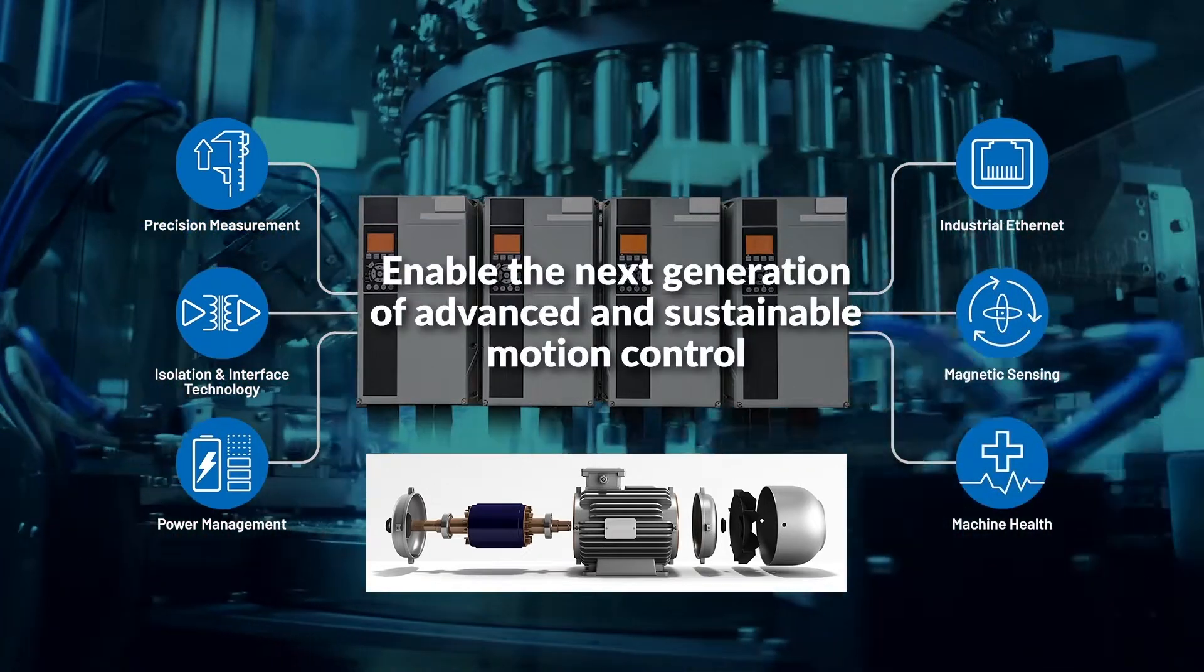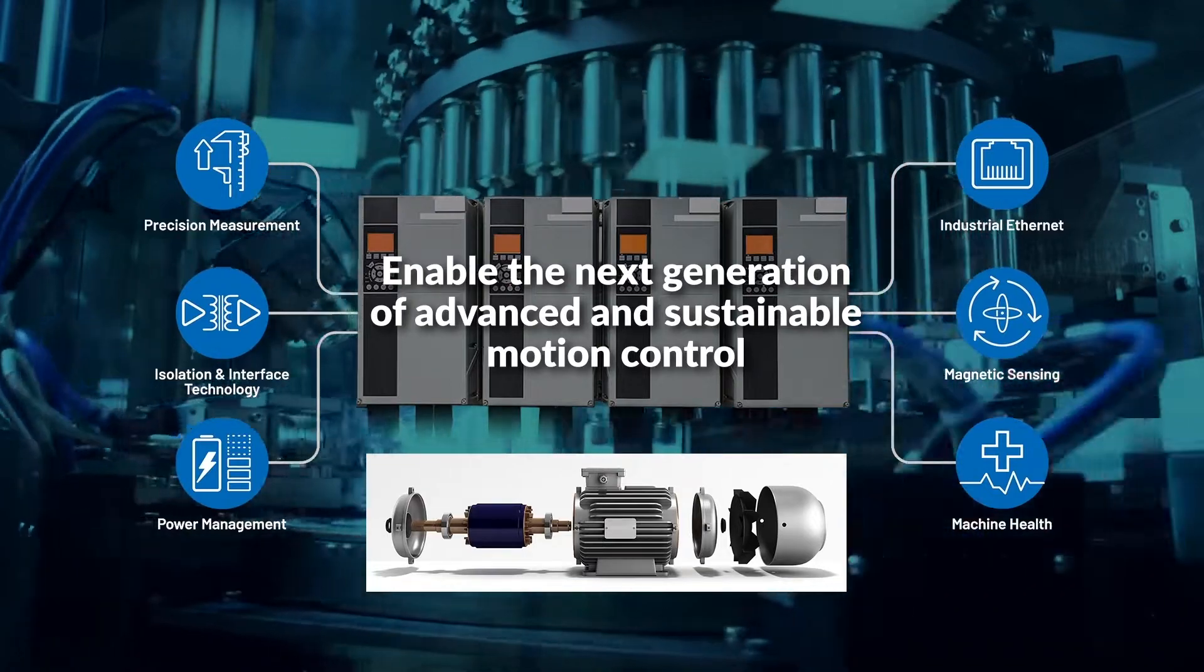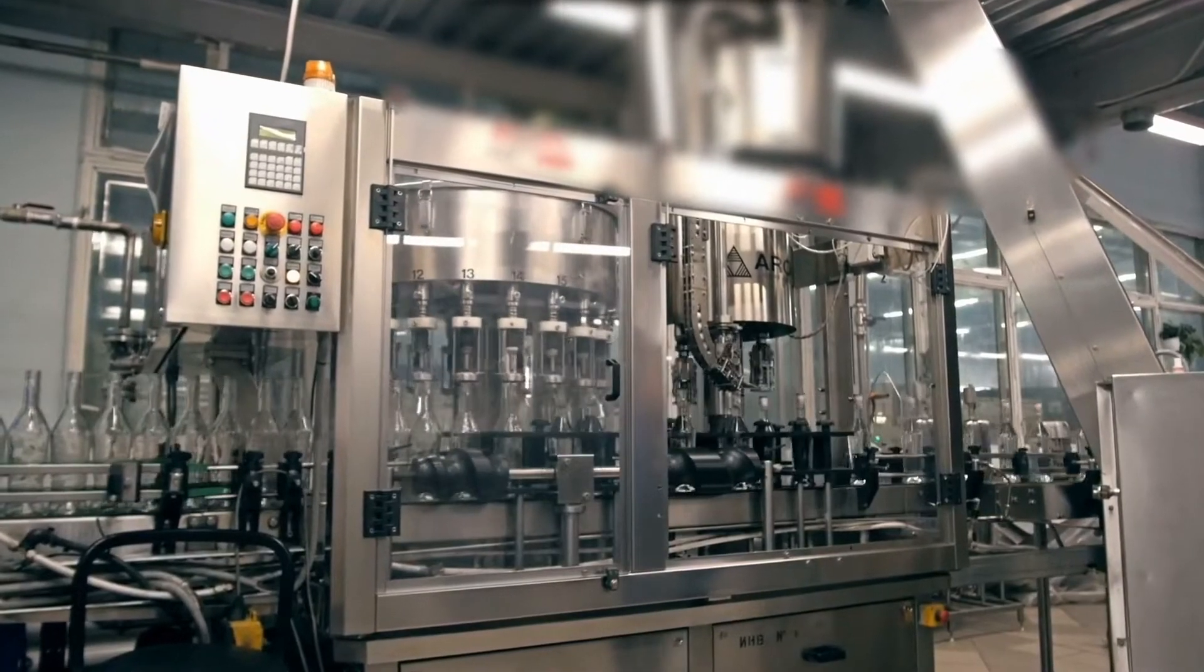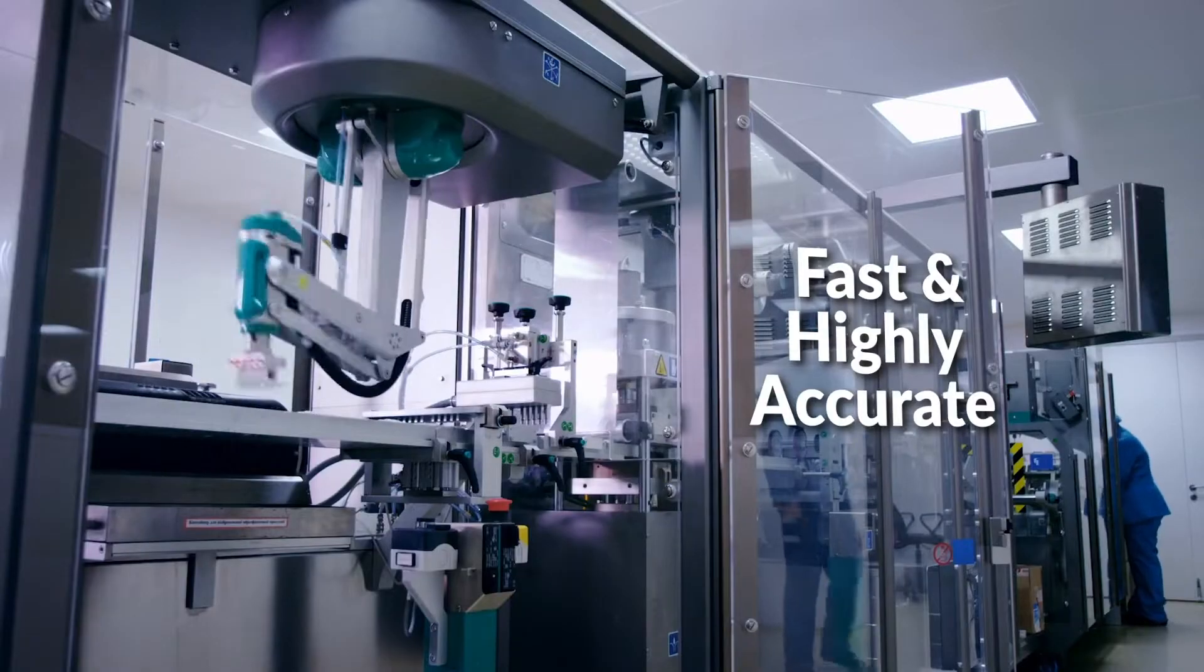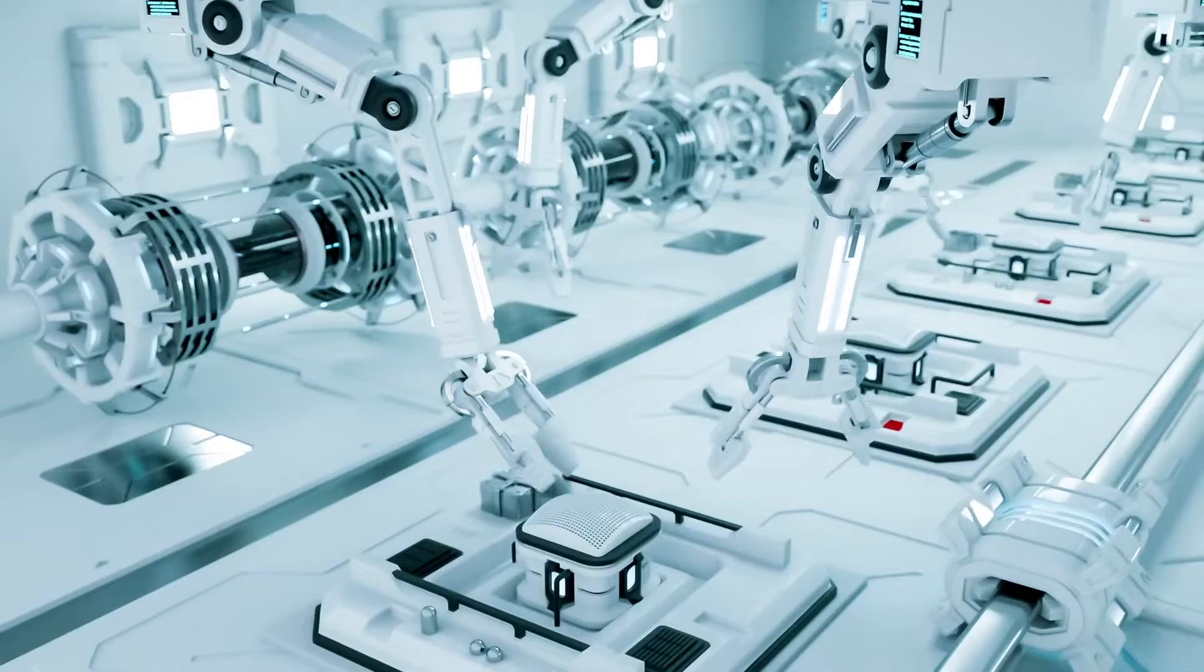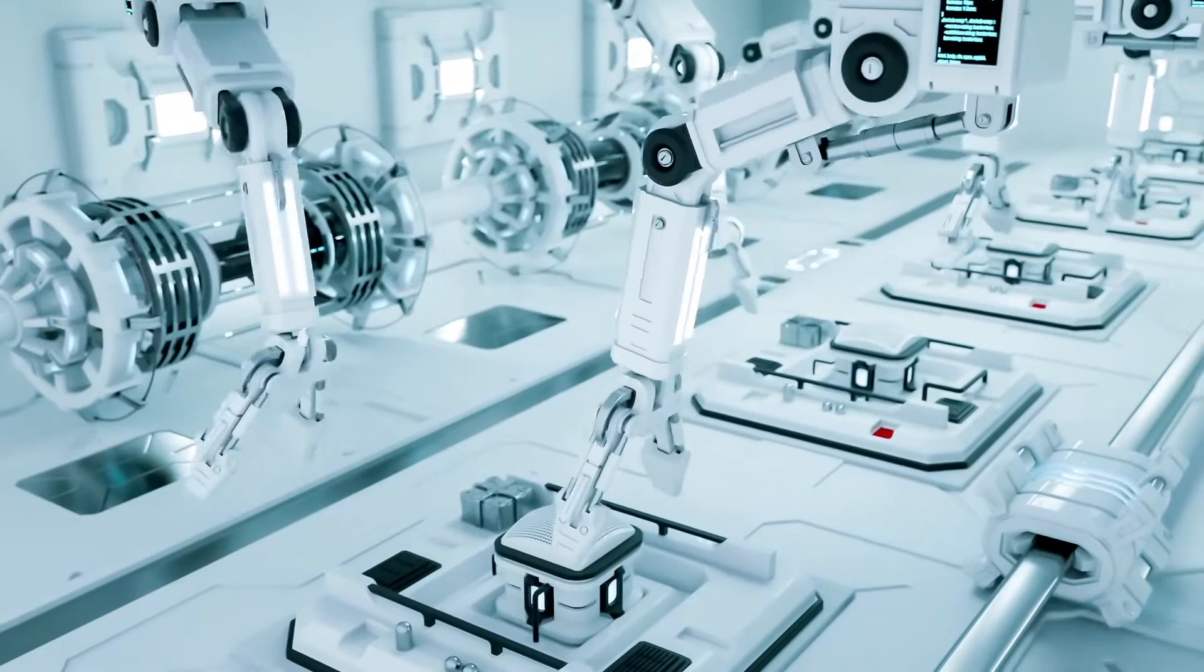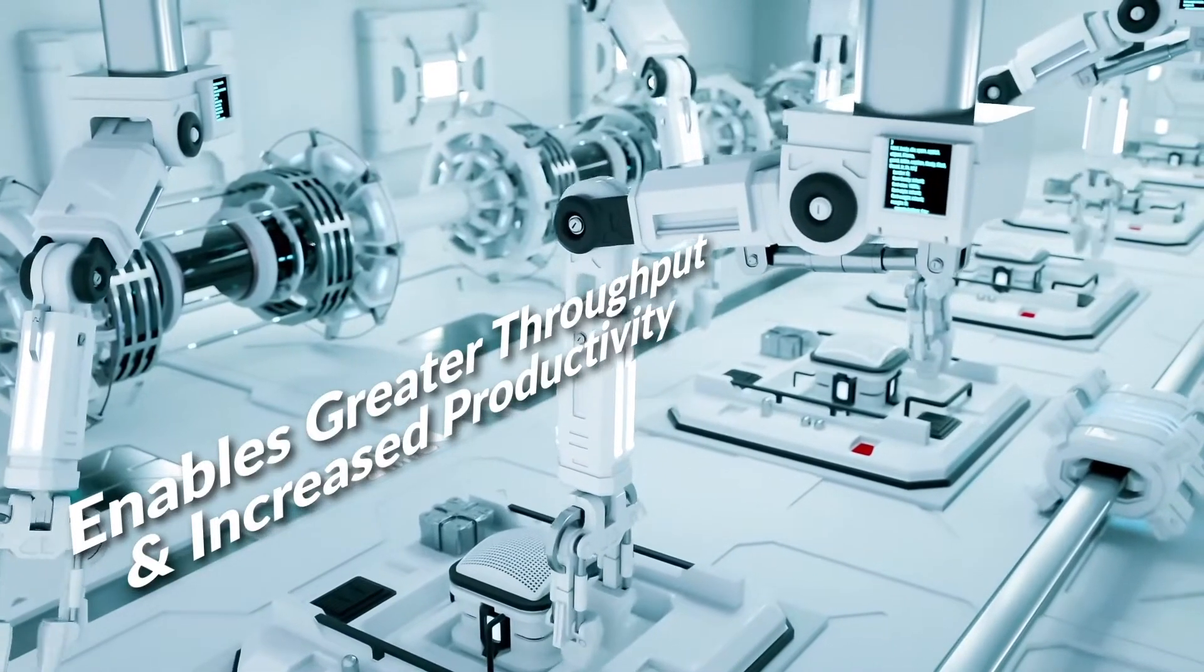We help our customers enable the next generation of advanced and sustainable motion control. Precision measurement solutions from Analog Devices provide high quality current feedback to provide fast and highly accurate control loop performance and deliver accurate position measurements in encoders and linear track applications which enables greater throughput and increased productivity.